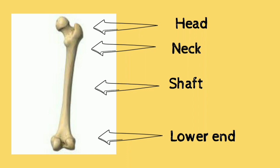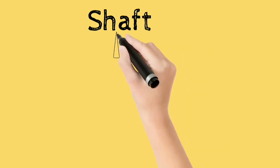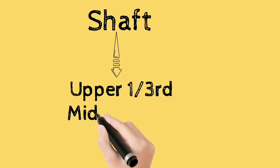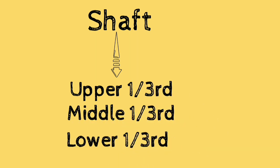Since our topic is the linea aspera, we will concentrate on the shaft of the femur. The shaft of the femur is divided into three parts: upper one-third, middle one-third, and the lower one-third.